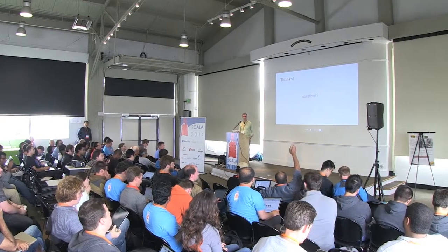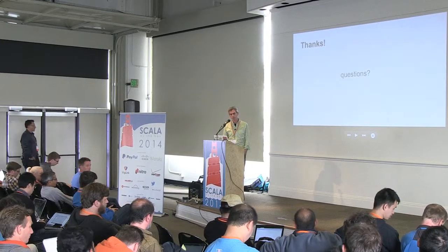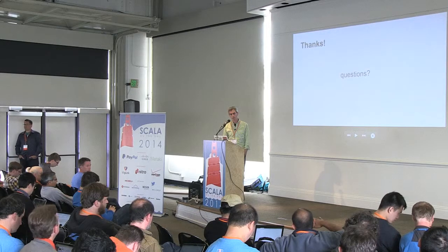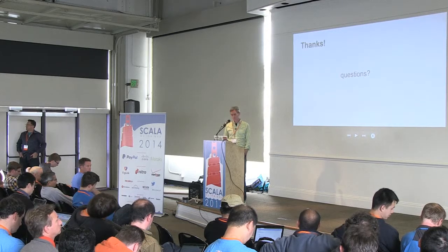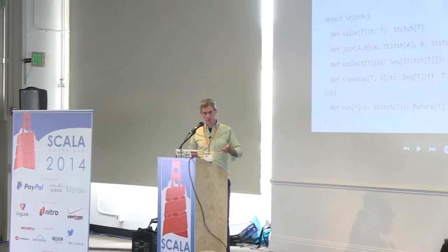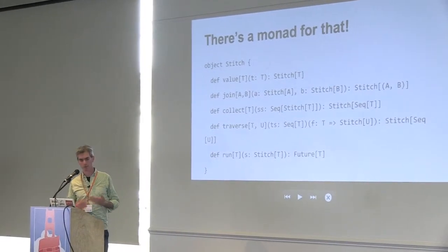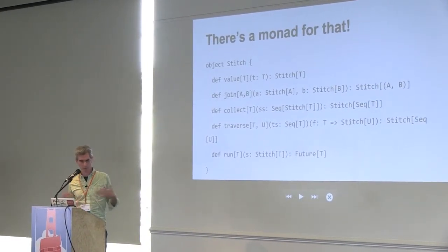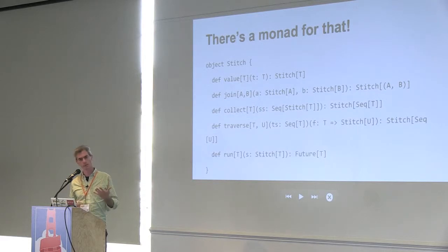Any questions? If you've used the Future interface, it's really similar. What you're talking about kind of corresponds to the collect interface: we have a sequence of queries and we want to concurrently wait for all of them and return the sequence of results. If any of those fail in collect, the whole thing fails. Just like futures, a Stitch embodies an exception — it can either return a successful result or an exception.